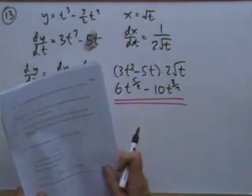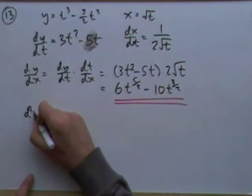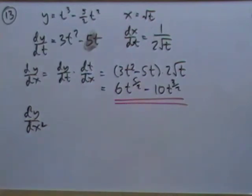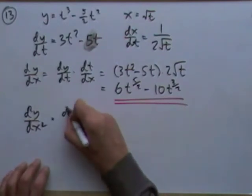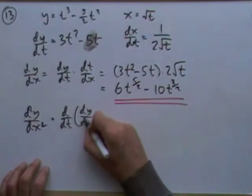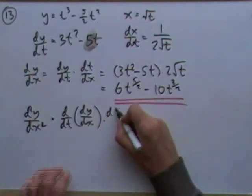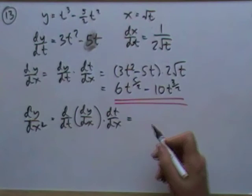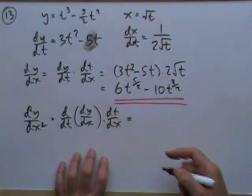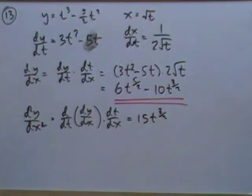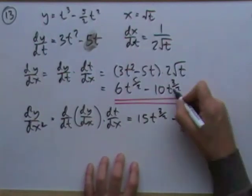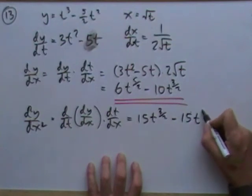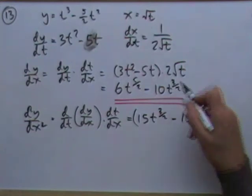For d²y/dx², since dy/dx is in terms of t, differentiate with respect to t and multiply by dt/dx. Differentiating 6t^(5/2) - 10t^(3/2): multiplying by the power gives 15t^(3/2) - 15t^(1/2). Then multiply by dt/dx = 2t^(1/2).